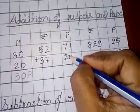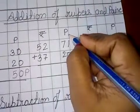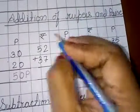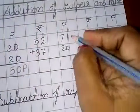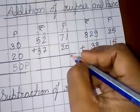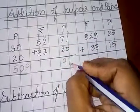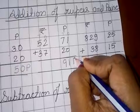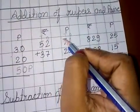Hamesha hum addition ya subtraction ones place digit se hi karte hain. So iska yeh ones ho gaya, yeh tens, aur rupees ka separate ones and tens. So here 0 plus 1, here we will get 1, and 7 plus 2 is 9. So 91 is paise, so we will write down P for 91.